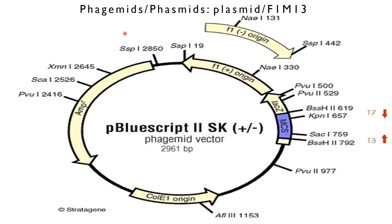Phagemid, or phasmid, is a plasmid that contains the F1 origin of replication from an F1 phage. It can be used as a type of cloning vector in combination with filamentous phage M13. The phagemid can be replicated as a plasmid and also be packaged as single stranded DNA in a viral particle.